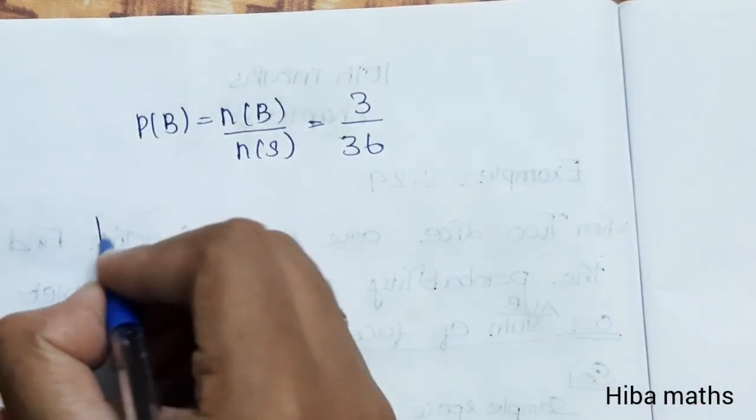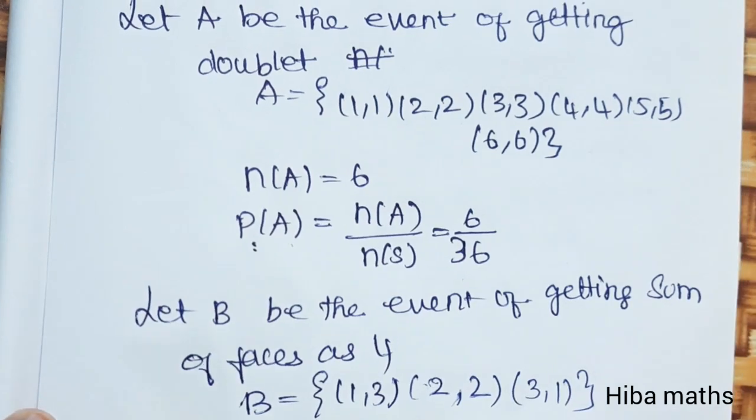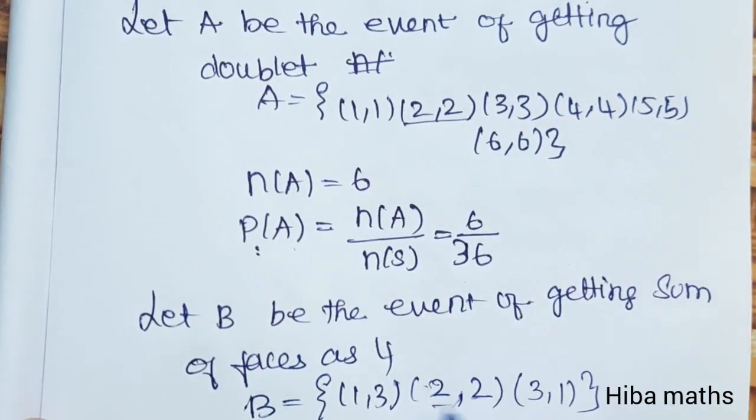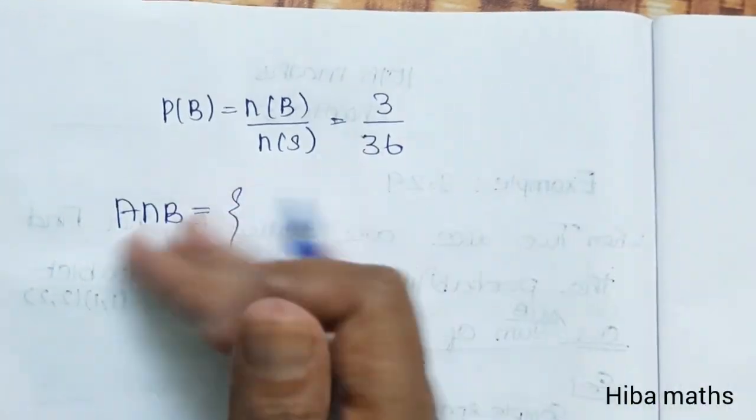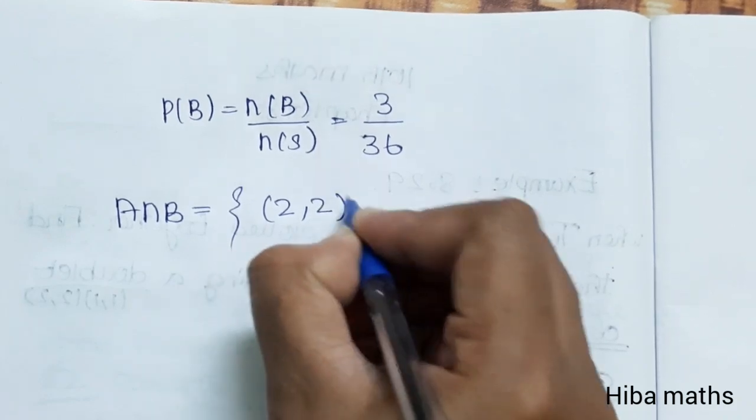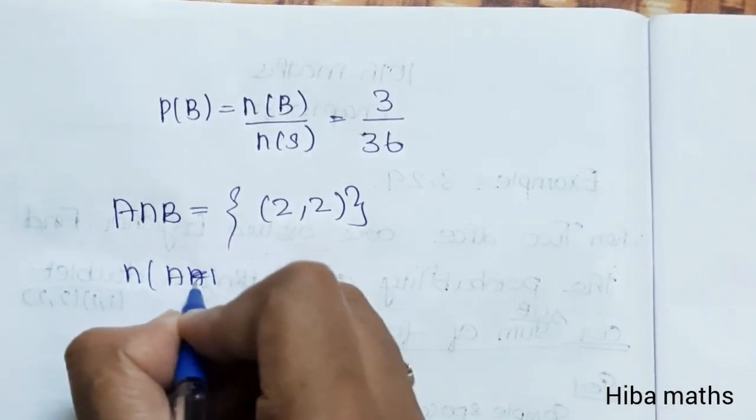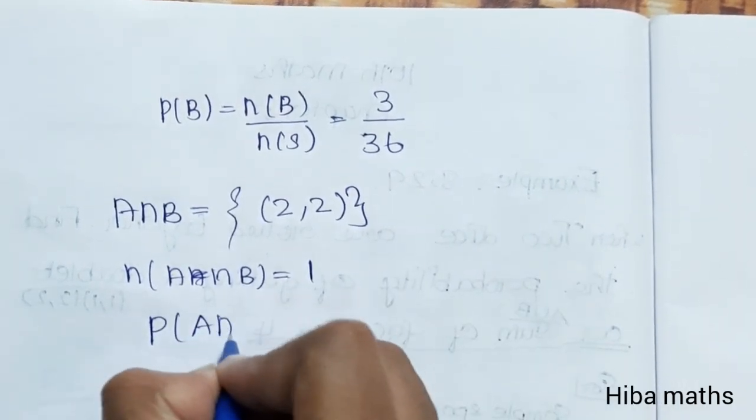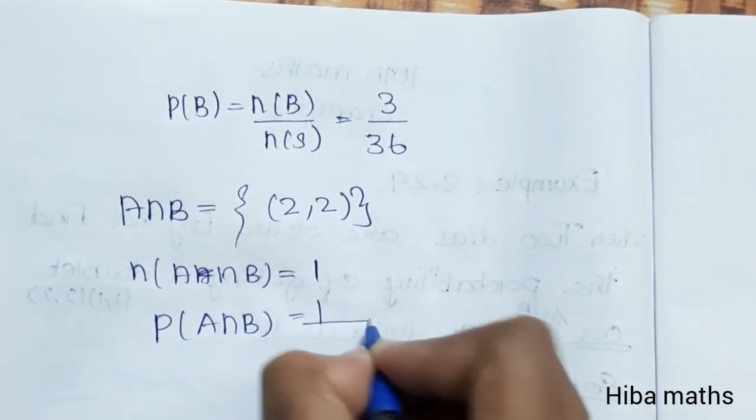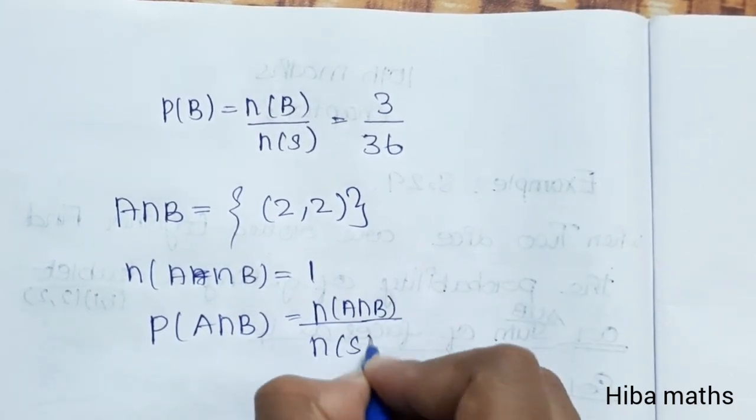Now for A intersection B, the common element is 2,2. So the intersection has only one element. N of A intersection B value is 1, and P of A intersection B is 1 by N of S.